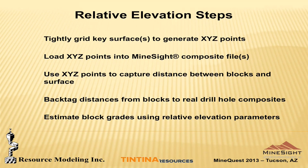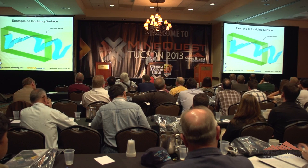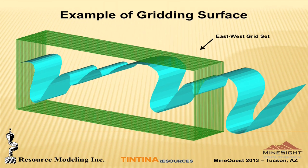Once the blocks know their relative position to those horizons or surfaces, it's easy to get those distances back-tagged onto the drill holes. So now both the drill holes and the models know what relative position they have with respect to those surfaces. We then use the interpolation method of choice — I'm using an inverse distance estimator. Regarding tightly gridding: when I started out, I would use traditional grid sets — say east-west, north-south, or plan-type grids — and that would generate points.